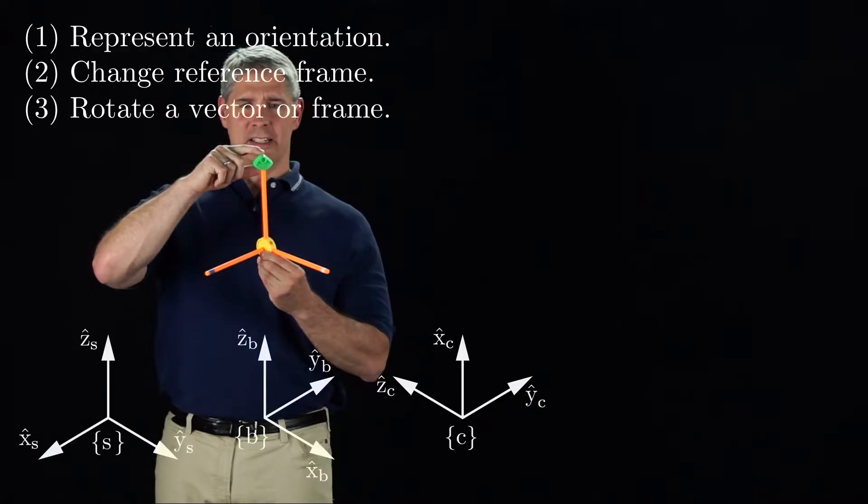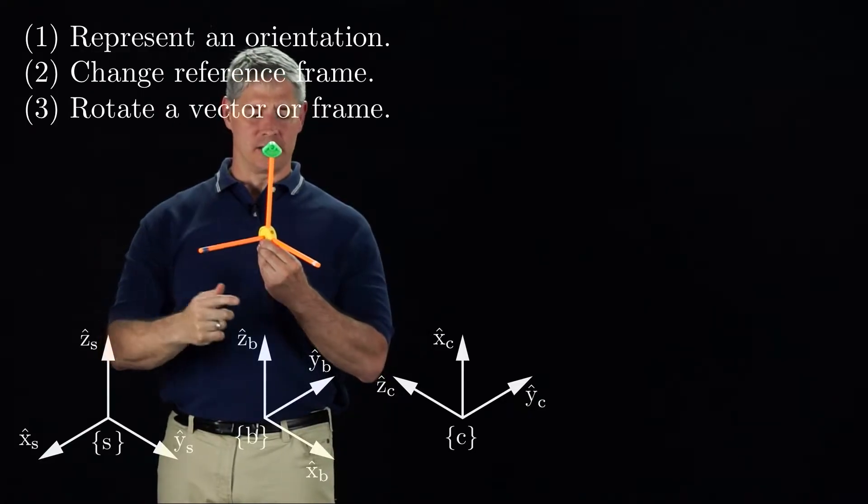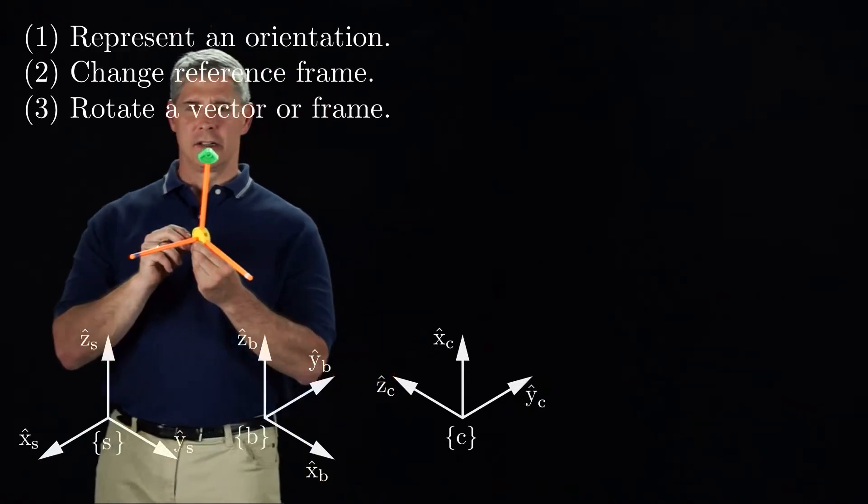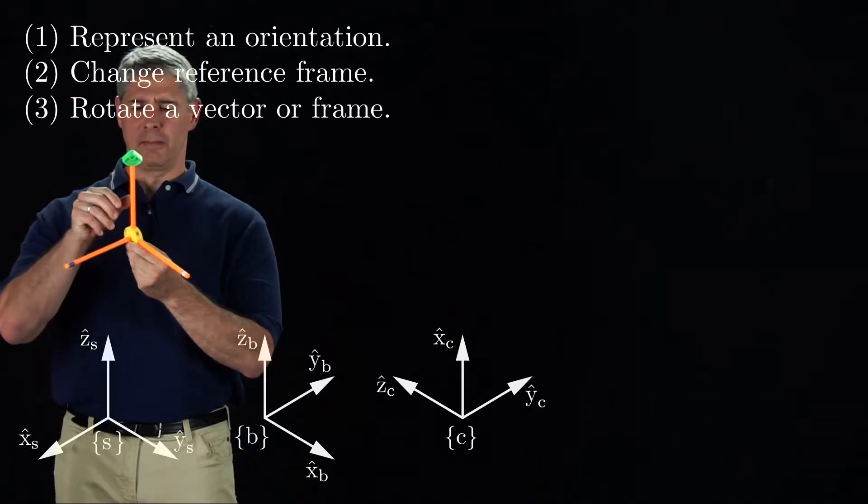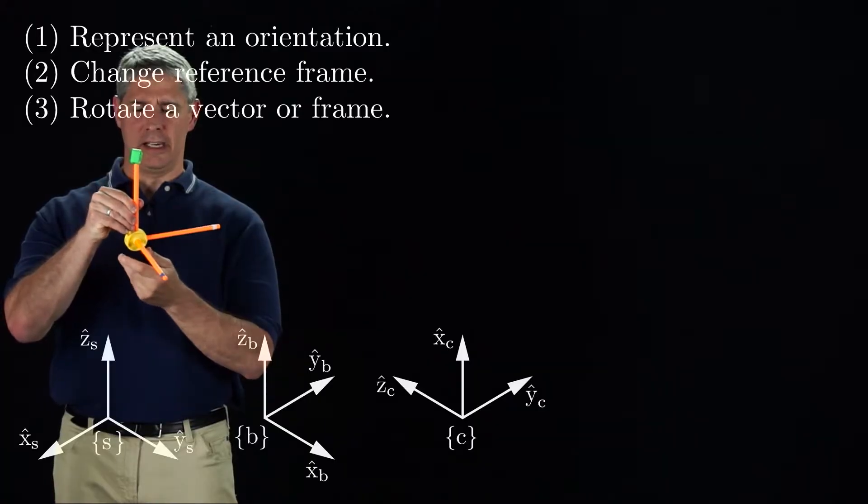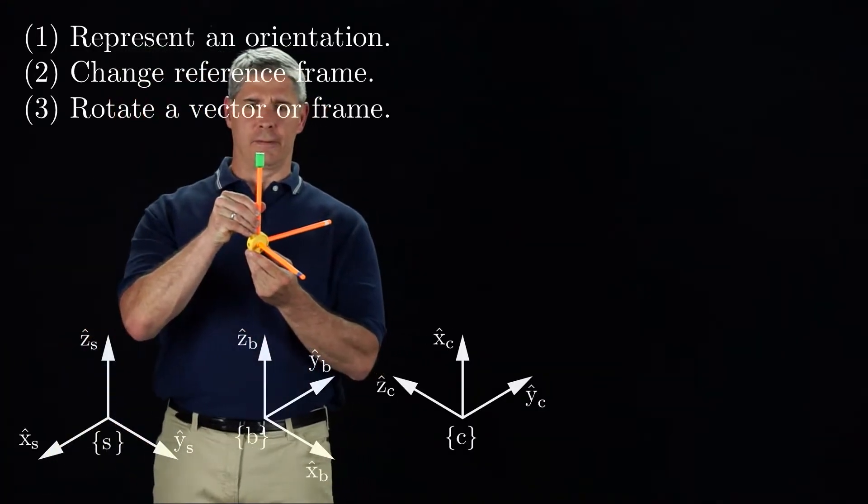This is the z-axis of the frame, this is the x-axis, and this is the y-axis. So initially, I'll orient it aligned with frame S, and then I'll rotate by 90 degrees about the z-axis, and then I get frame B.